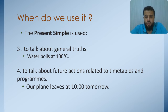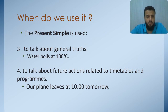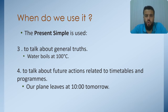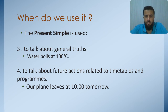To talk about future actions related to timetables and programs: our plane leaves at 10 tomorrow. Now, we have the word tomorrow here, but we didn't say the plane will leave — we said the plane leaves, because the plane is leaving whether you go or you don't. So, this is something you don't actually control. For example, tomorrow is Monday — not tomorrow will be Monday, because it is Monday. Tomorrow is coming and nobody can change it.